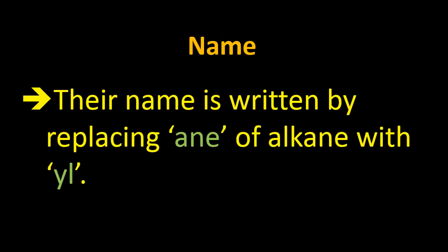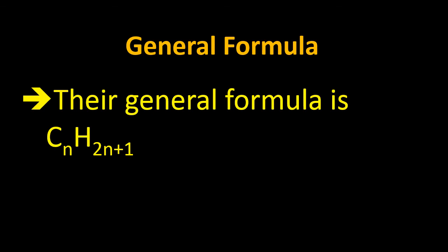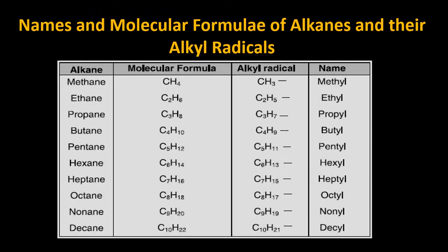Alkyl radicals are represented by the letter R. Their name is written by replacing the '-ane' ending of the alkane with '-yl'. The general formula for alkyl radicals is CₙH₂ₙ₊₁, which is different from alkanes, which is CₙH₂ₙ₊₂. Naturally, as one hydrogen is removed, the formula changes.